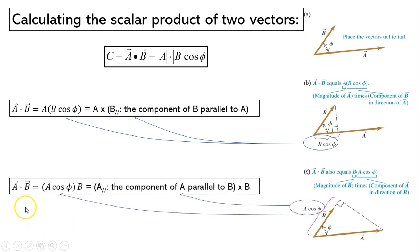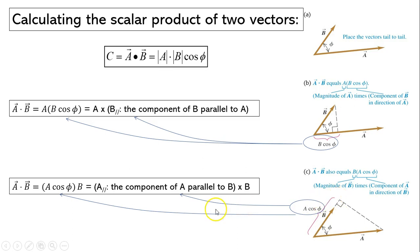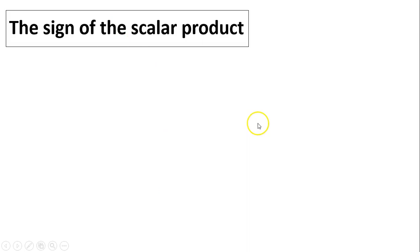If I rearrange it, I put A cosine phi times B because these two are equivalent. A times cosine phi — take a look at the diagram — is vector A projected on B. That is a component of A parallel to B. So it's the magnitude of B multiplied by the magnitude of A projected on B. That is how you calculate the scalar product.